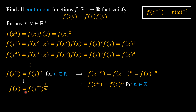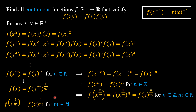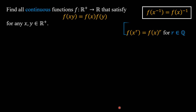On the other hand, replacing n with m we have f(x) = f((x^(1/m))^m) = f(x^(1/m))^m. Replacing x with x^(1/m) gives f(x^(1/m)) = f(x)^(1/m) for any natural number m. Therefore f(x^(n/m)) = f(x)^(n/m) for any integer n and natural number m. This result can simply be written as f(x^r) = f(x)^r for any rational number r.